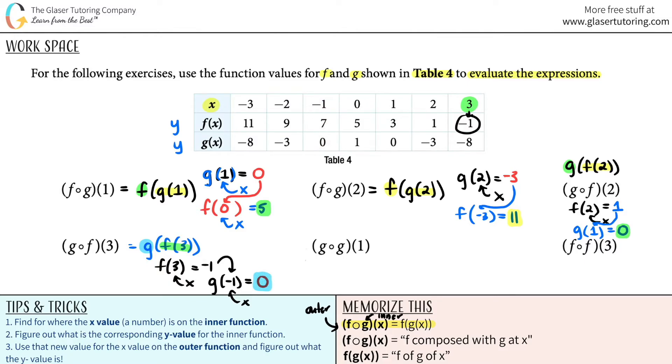Let me erase this. Next one. G composed with g at 1. Same thing as g of g of 1. Inner function now is clearly g of 1. g of 1. This is the x value that you're searching for. The x is 1. They told you it's a g function. So you got to go all the way down. And that outputs a 0.